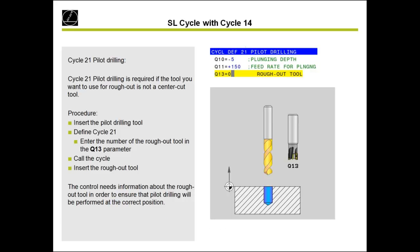Cycle 21 for pilot drilling is only necessary when using a non-center-cut roughing tool, or when you want to plunge straight down along the tool axis. If you define cycle 21, in Q13 you tell the control the roughing tool you will use later in cycle 22, so it can calculate the drilling positions for that roughing tool.